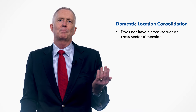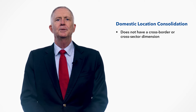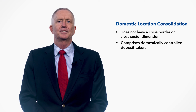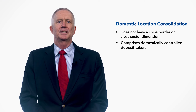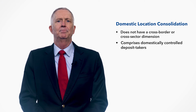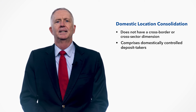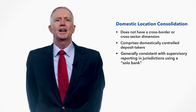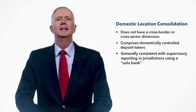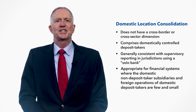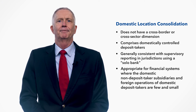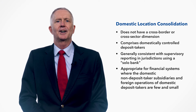DL does not have a cross-border or a cross-sector dimension. It comprises domestically controlled deposit takers including their domestic branches and deposit taker subsidiaries, and foreign controlled deposit takers including domestic branches and deposit taker subsidiaries, and branches of foreign deposit takers. DL is generally consistent with supervisory reporting in jurisdictions using a solo bank rather than consolidated reporting basis. DL is appropriate for financial systems where the domestic non-deposit taker subsidiaries and foreign operations of domestic deposit takers are few and small.